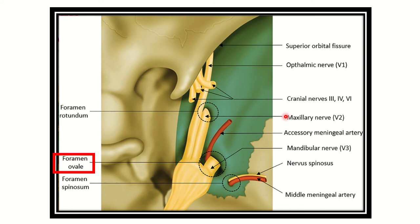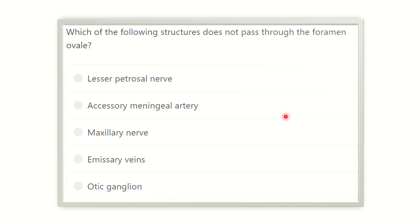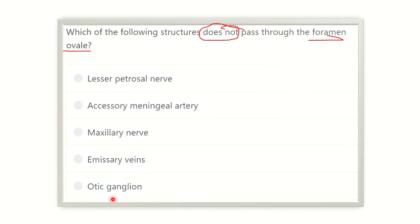Hello everyone, welcome to another question and answer session for the MRCS exam. This session will help you prepare for the MRCS exam. The question is: which of the following structures does NOT pass through the foramen ovale? The answer options are: lesser petrosal nerve, accessory meningeal artery, maxillary nerve, emissary vein, and otic ganglion.